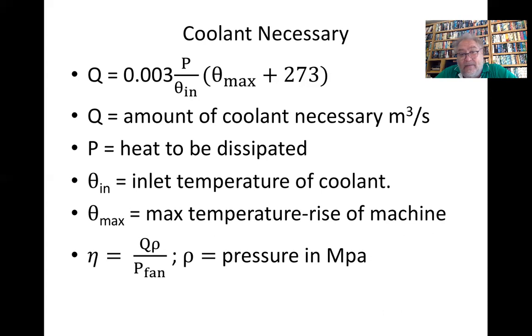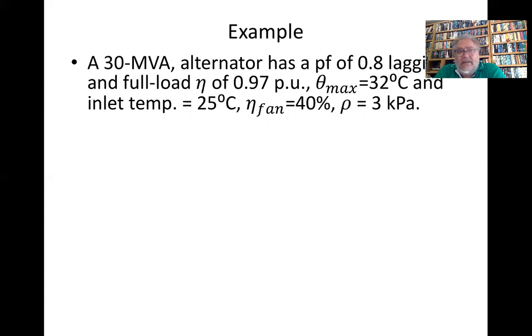Let's look at an example. A 30 MVA alternator has a power factor of 0.8 lagging and a full load efficiency of 0.97. Maximum temperature rise is 32 degrees, and the inlet temperature is 25 degrees. The efficiency of the fan is 40%, and ρ is 3 kilopascal.